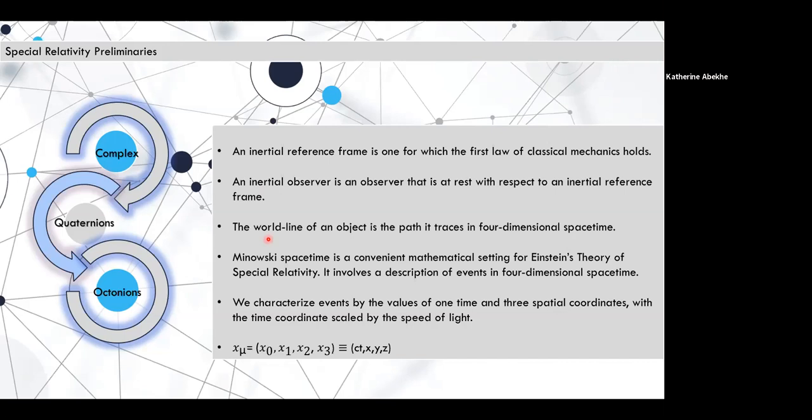The inertial observer is one that is at rest with respect to an inertial reference frame. And the Minkowski spacetime is just a description of events in four-dimensional space. And we're going to characterize these events by xᵤ. xᵤ consists of one time and three spatial coordinates. x₀ is its time coordinate scaled by the speed of light so that it is a distance just like the other coordinates.